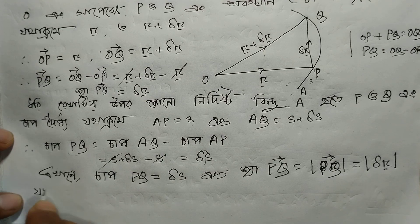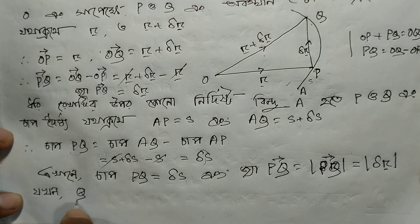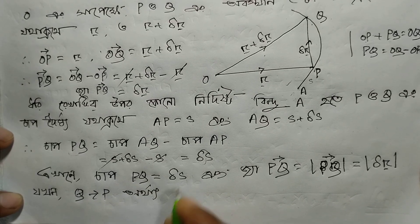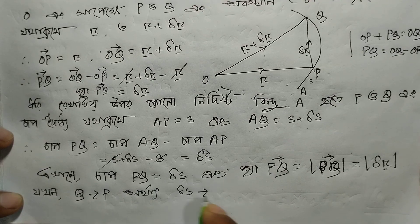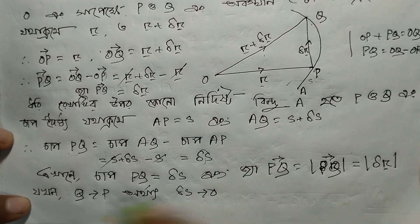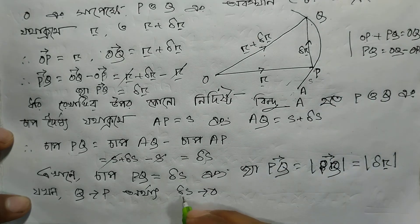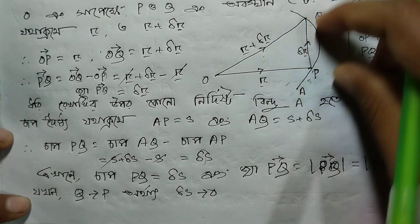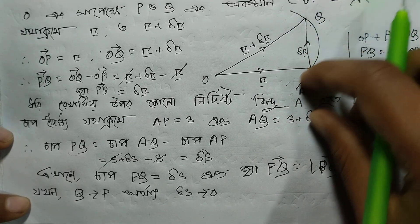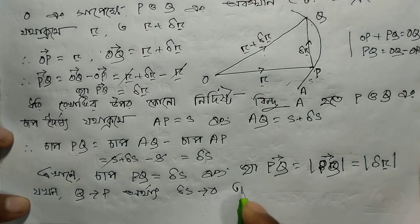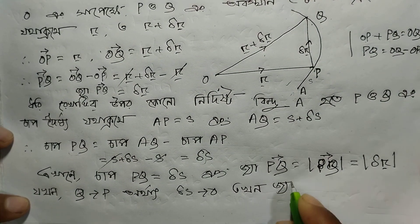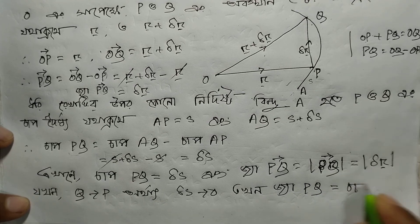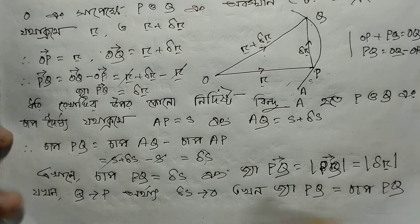Here we identify that when del s tends to zero — taking the limit — del s → 0, and PQ equals to... what do we get? The modulus of PQ divided by del s in the limit.